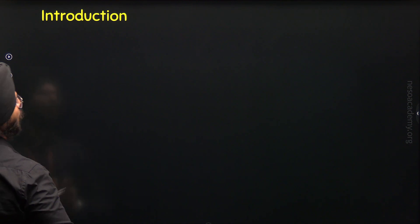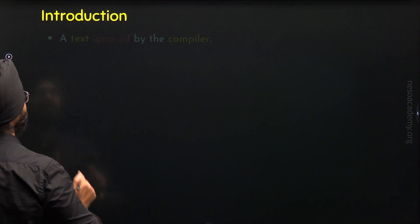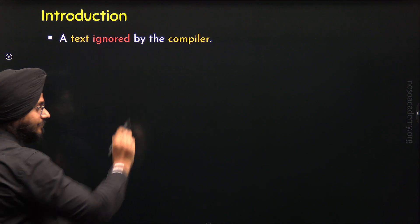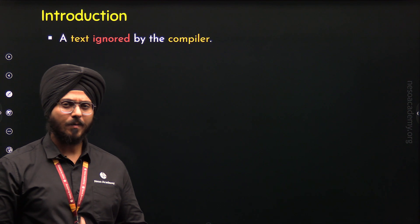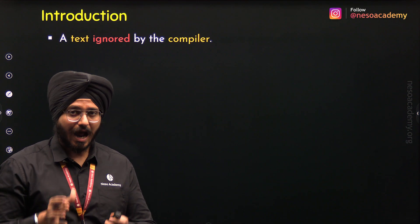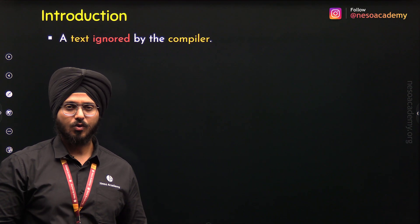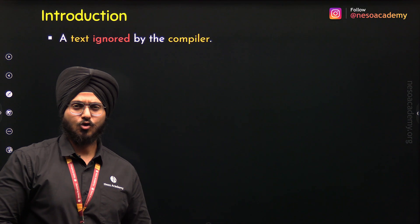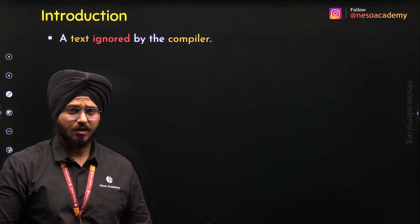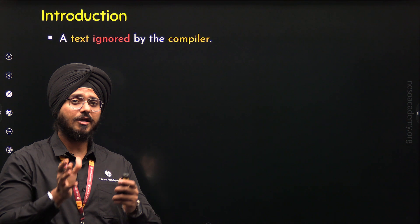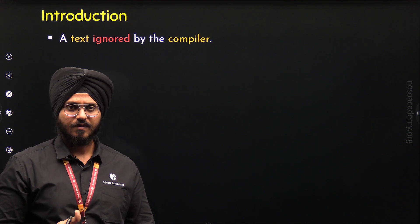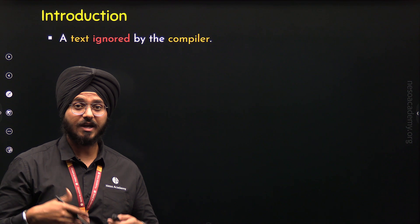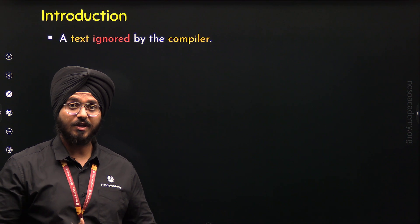So what is a comment? A comment is a text ignored by the compiler. A comment is some text we add in our source code which is completely ignored by the compiler. Now you might be thinking, if a comment is completely ignored by the compiler, then why do we add a comment in the source code? It will not get evaluated. Then why do we add a comment?